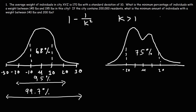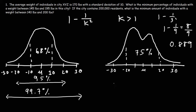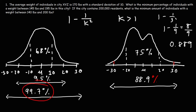If k equals 3, we get 1 minus 1 over 9, which is 8 over 9, or approximately 0.889. So within three standard deviations of the mean, at least 88.9% of the data is within this range. Whereas for a standard normal distribution using the empirical rule, 99.7% of the data is within three standard deviations of the mean.